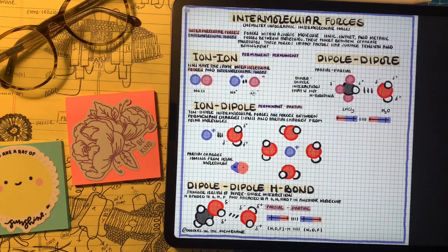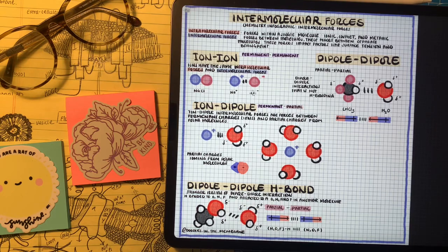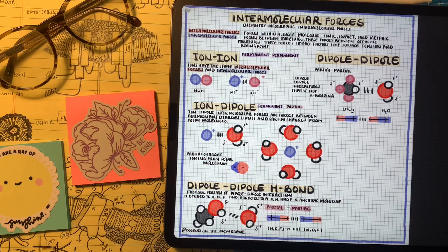When we're talking about intermolecular forces, this is when we're focusing on the attraction or repulsion forces between two molecules, not so much the interactions that go on within them. Intramolecular forces are the forces within a single molecule, such as ionic, covalent, or metallic bonding, whereas intermolecular forces are the forces in between molecules.